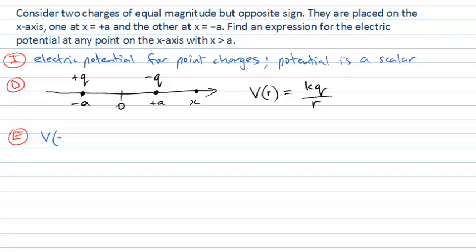Our potential here at some location x is going to be simply the sum of the potential from the positive charge plus the potential from the negative charge.